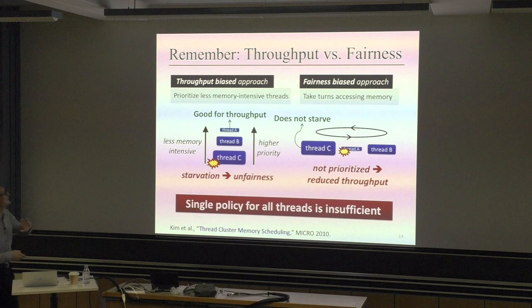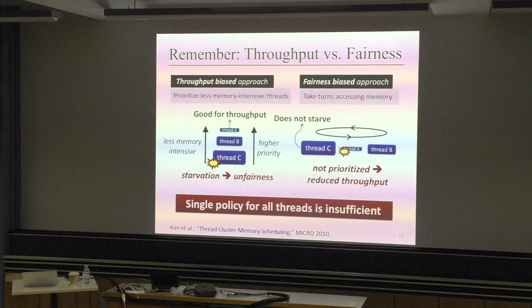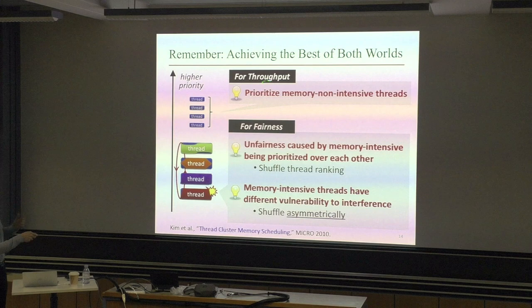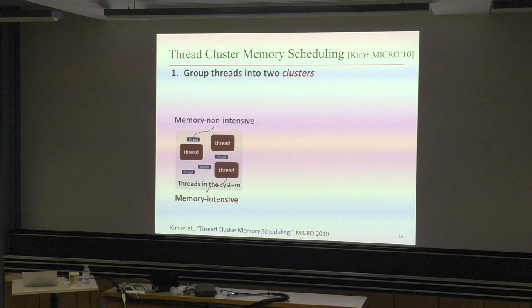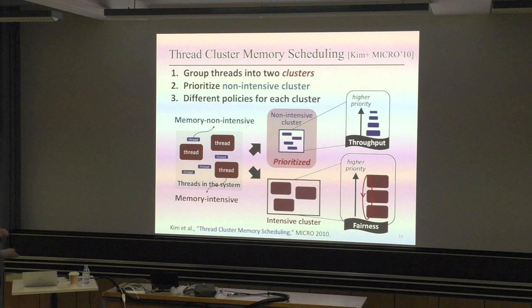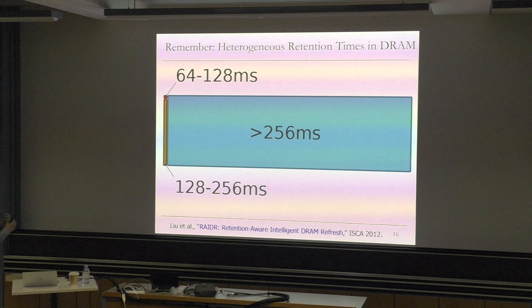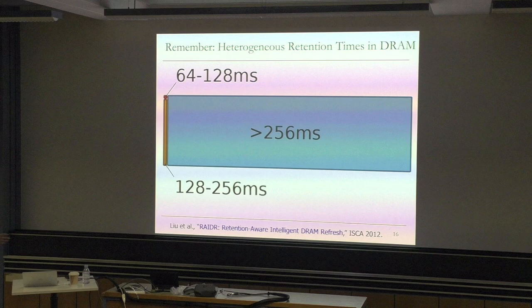Hybrid memory systems are already clear to you. In thread cluster memory scheduling, we have the throughput versus fairness tradeoff - to satisfy different metrics we actually design different policies: one for throughput, another for fairness. And RAIDR exploits natural heterogeneity in the system - because of process manufacturing, you have natural heterogeneity in the retention times of different cells, giving a heterogeneous substrate to take advantage of. Existing systems don't exploit this heterogeneity - they refresh everything every 64 milliseconds. But as long as you can figure out how to exploit this heterogeneity in refresh rates, it's a much better approach.